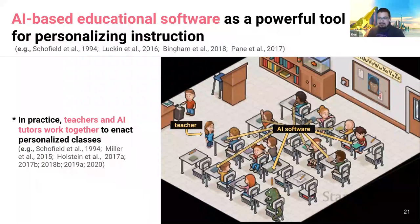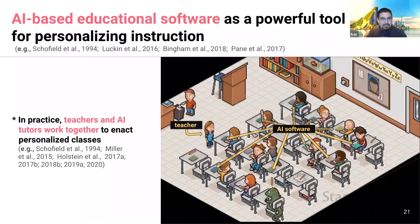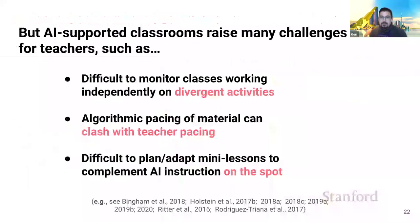Intelligent tutoring systems can adapt instruction to individual students based on real-time models of students' behavior, their knowledge, and even their affective states. They've been demonstrated in several meta-reviews to enhance student learning compared with other forms of classroom instruction. During my first year in graduate school, I spent over 100 hours observing a wide range of classrooms using these AI tutors. In most of the classrooms, I observed the teacher constantly moving throughout the room and holding brief one-on-one help sessions with their students. But the role of the teacher in these AI-supported classrooms has historically been understudied.